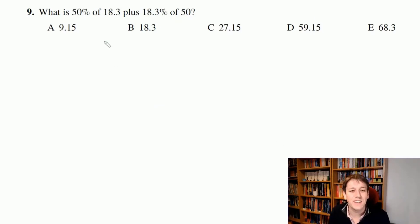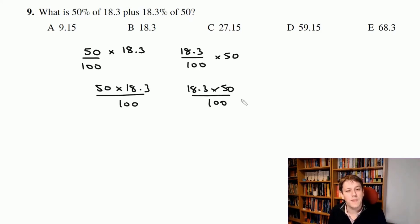The key to making this question a lot easier is to realize that 50% of 18.3 is actually the same as 18.3 percent of 50. Why is that the case? Well, if you work out a percentage of 18.3, I'd be doing 50 over 100 times 18.3, whereas if I do 18.3 percent of 50, I do 18.3 over 100 times 50. Well those two are exactly the same. They're both 50 times 18.3 over 100. So we're just going to say we know they're both the same. So let's take 50 percent of 18.3 and just say we've got two lots of that. Two lots of 50 percent of 18.3 is 100 percent of 18.3, and so the answer here is B, 18.3.